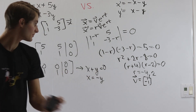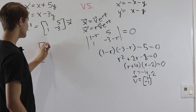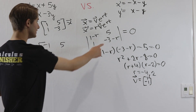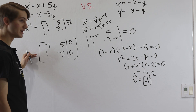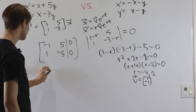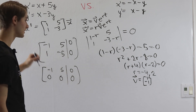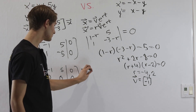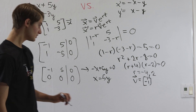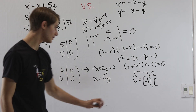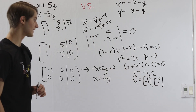Now we plug in r equals 2. The matrix becomes negative 1, 5, 1, negative 5 augmented with 0. The top row is negative 1 times the bottom row, so they cancel, giving negative x plus 5y equals 0, or x equals 5y. Setting y equals 1, x equals 5, so our second eigenvector is 5, 1.